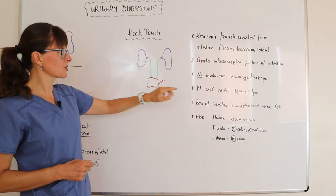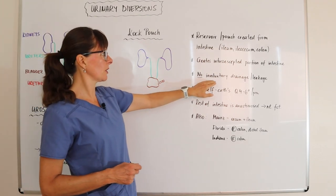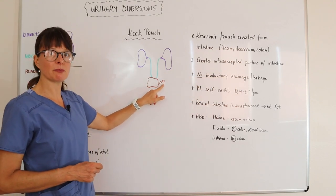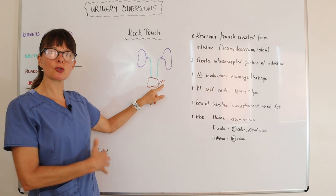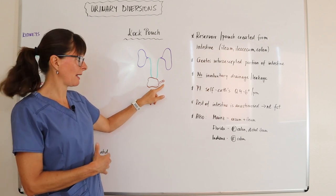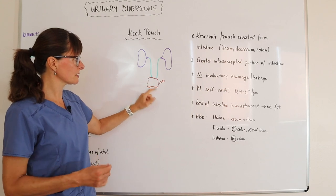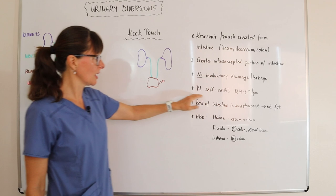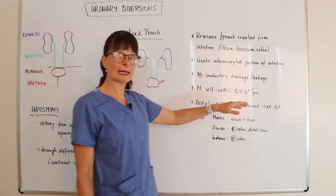The benefit of the Coke pouch is that there's no involuntary drainage or leakage from the stoma site, meaning that the patient does not usually require wearing a urostomy or some other collection bag. But in order to drain this reservoir, the patient needs to self-catheterize themselves every four to six hours or as needed.